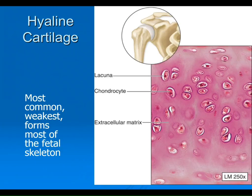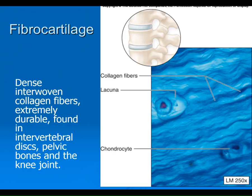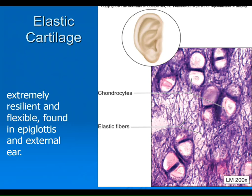How do you recognize cartilage? I see eyeballs — little eyeballs looking at me. I remember them as cat eyeballs because 'cat' and 'cartilage' start the same. For hyaline: pure eyeballs in a glassy matrix. Fibrocartilage: eyeballs with wavy collagen fibers between them — a tougher kind of cartilage. Elastic cartilage: eyeballs connected by rubber band-like elastic fibers — the squishy kind found in your ear or nose.